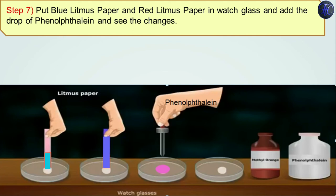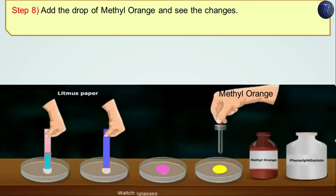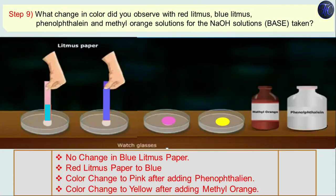Remember, students, that phenolphthalein did not change the color of the solution in acid. But here phenolphthalein has changed the color to pink in basic solution. And when we add a drop of methyl orange to the solution, the color turns yellow. So for NaOH solution: there is no change in the color of blue litmus paper because the solution is basic, and in a base blue litmus paper doesn't change its color. The red litmus paper turned blue, signifying the solution is a base. The solution turned pink with phenolphthalein and yellow with methyl orange.